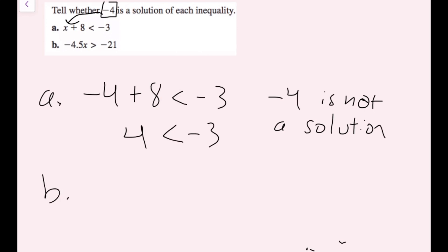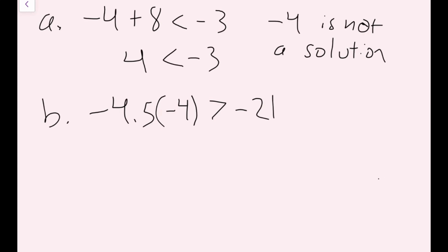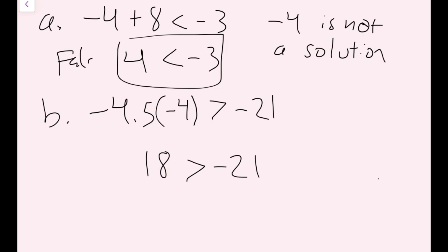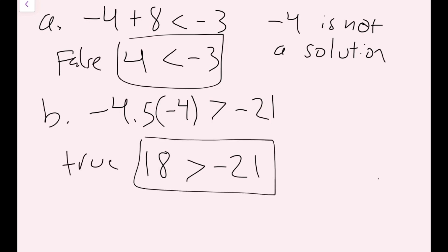For part B, I'll do the same thing. Plugging in negative 4 for x: negative 4.5 times negative 4 is greater than negative 21. A negative times a negative is a positive, and 4.5 times 4 is 18. So positive 18 is greater than negative 21 — that is true. And since this is true, negative 4 is a solution for part B.